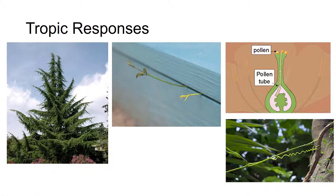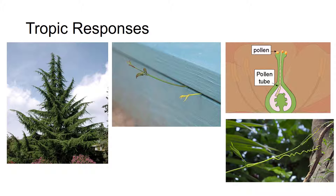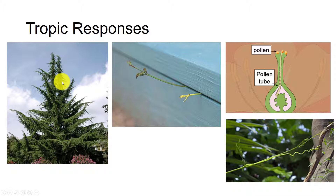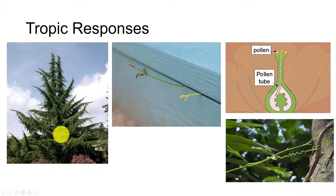Plants respond to the diverse types of information present in the environment in a number of ways. A tropic response is a growth response oriented with regard to the stimulus. Positive tropism is growth toward the stimulus, while negative tropism is growth away from the stimulus. Plagiotropism is growth at an angle. The central shoot of this tree grows vertically, probably due to both positive phototropism and negative gravitropism, but the branches grow at an angle to the vertical, plagiotropically.